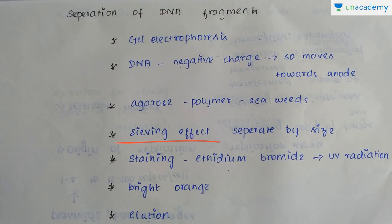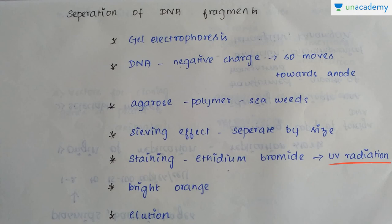If the DNA fragment size is very small, it will move farther. We cannot see the pure DNA as it is not visible to light. So these fragments are subjected to staining, where they are treated with ethidium bromide, followed by UV radiation treatment. As a result, the DNA fragments will appear as bright orange bands. This overall process is called elution.